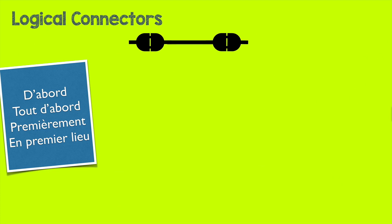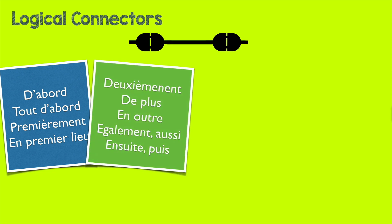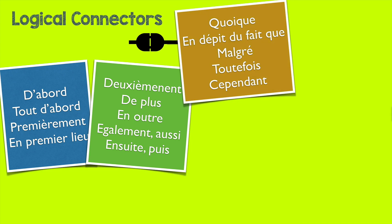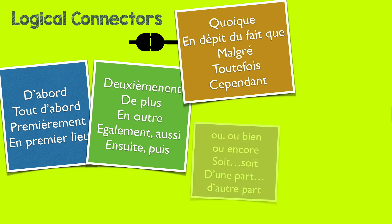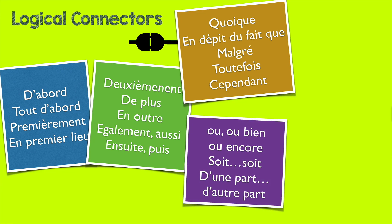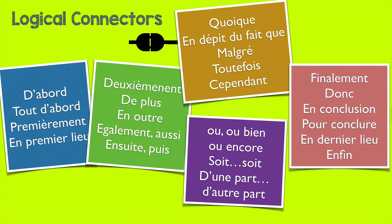In this lesson we saw how to start a conversation using d'abord, tout d'abord, premièrement, en premier lieu. To add an idea: deuxièmement, de plus, en outre, également, aussi, ensuite, puis. To make an objection: quoique, en dépit du fait que, malgré, toutefois, cependant. To offer choices: ou, ou bien, ou encore, soit…soit, d'une part…d'autre part. To conclude: finalement, donc, en conclusion, pour conclure, en dernier lieu, enfin.